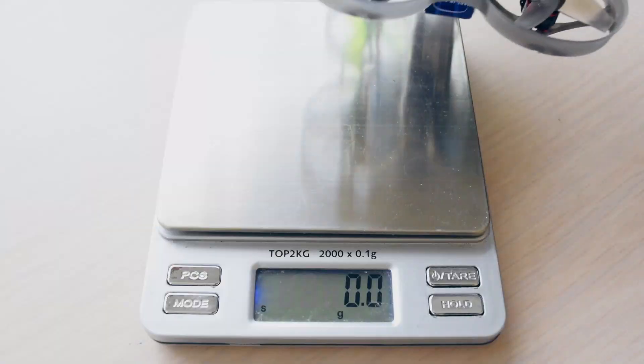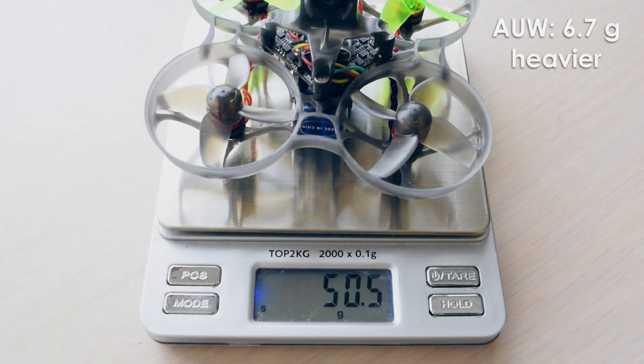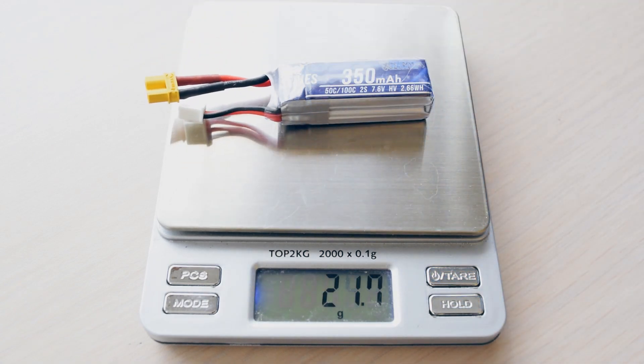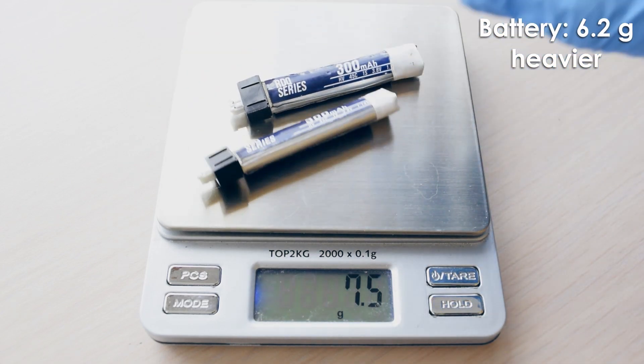On the scales, the all-up weight is 50.4 grams, which is 6.7 grams heavier than when we started, but most of that weight is coming from the bigger battery, which weighs a whole 6.2 grams more than the two smaller one cells that I was using.